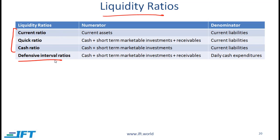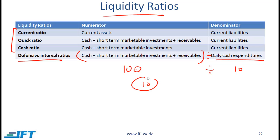The ratio that we didn't see before is the defensive interval ratio. This looks at the current assets divided by the daily cash expenditures. So if the current assets are 100 and the daily cash expenditure equals 10, then our defensive interval ratio is 100 over 10, which is 10. This essentially means that we have 10 days worth of short-term assets, so we can meet 10 days worth of daily expenditures.